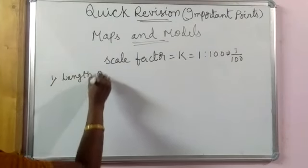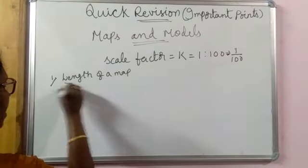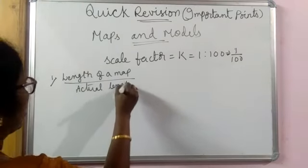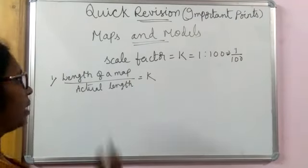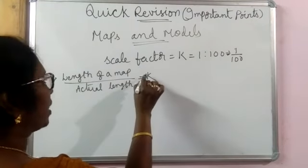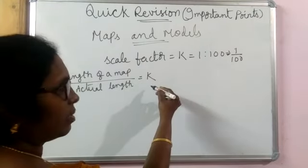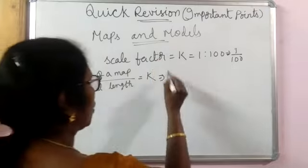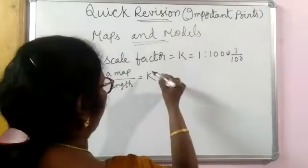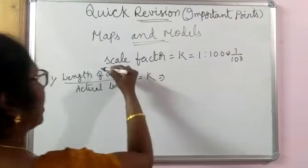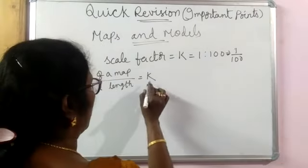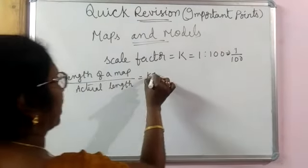Length of a map by actual length is the scale factor. That means length of the map by actual length, K means 1 by 100. That means if you want to get actual length, suppose it is 1 by 100, then 100 into length of the map gives you the actual length.